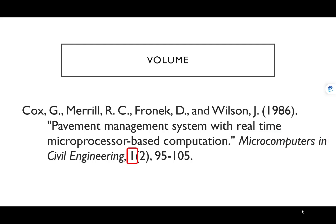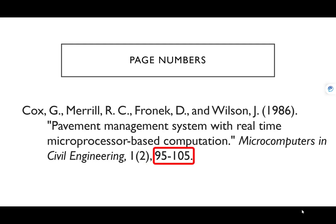The next part is the volume number, written as a number. After the volume number comes the issue number. This is written as a number and enclosed in parentheses followed by a comma. And finally you have the page numbers. You write the number range followed by a period. And there you have it — that is what a basic journal article citation looks like in ASCE citation format.